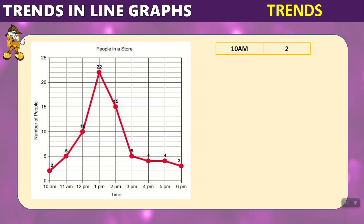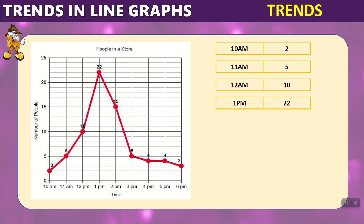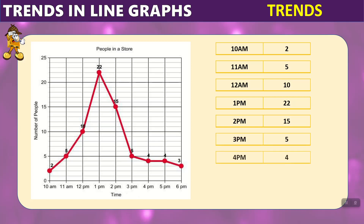At 10am there were 2 people. At 11am, 5 people — which increased. At 12pm, 10 people — even more. At 1pm, 22 people. We can see on the graph it keeps going higher and higher. After 1pm, at 2pm we see it comes back down to 15. At 3pm, down to 5. At 4pm, 4. At 5pm, still 4. And at 6pm, 3 people. So we can see the trends going up and going down throughout the day.